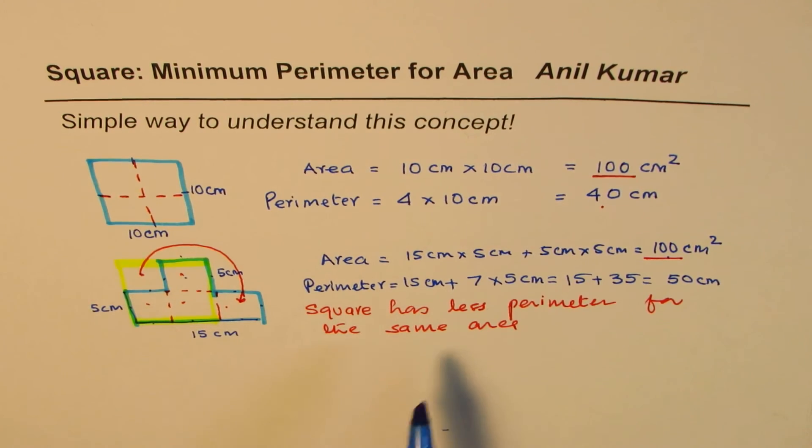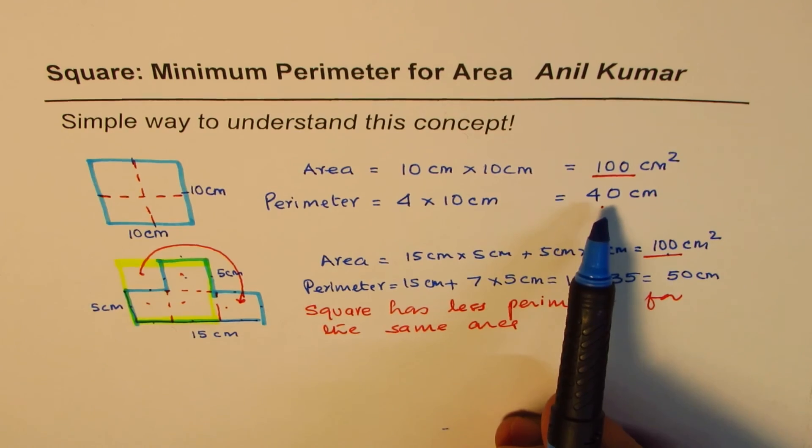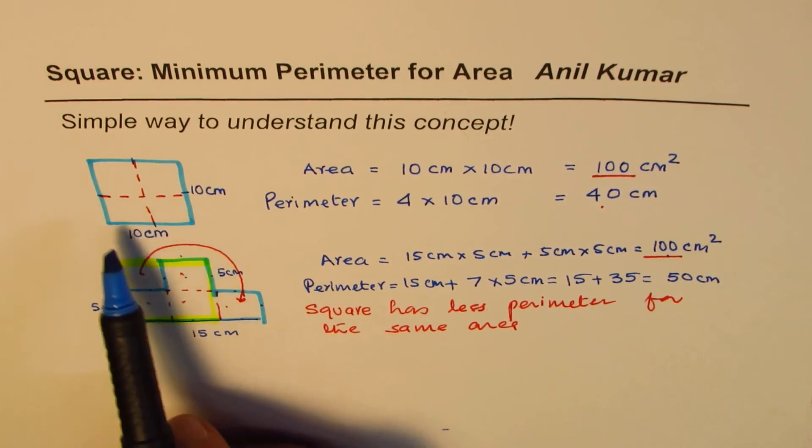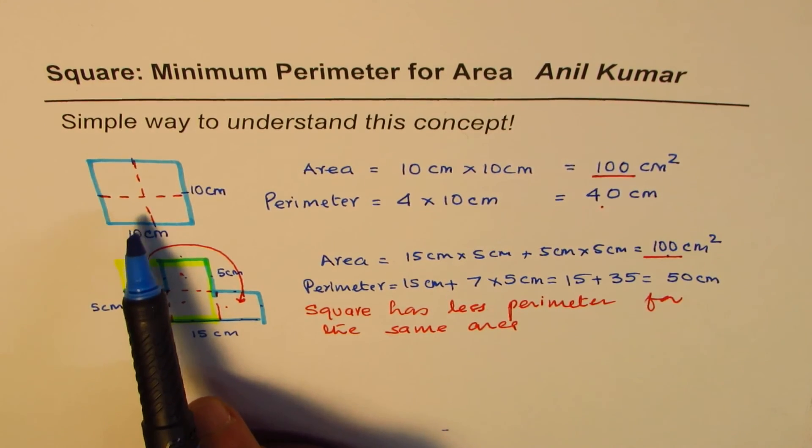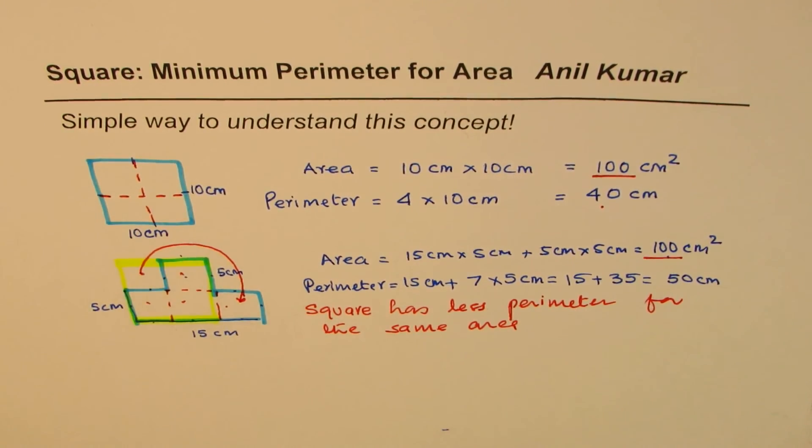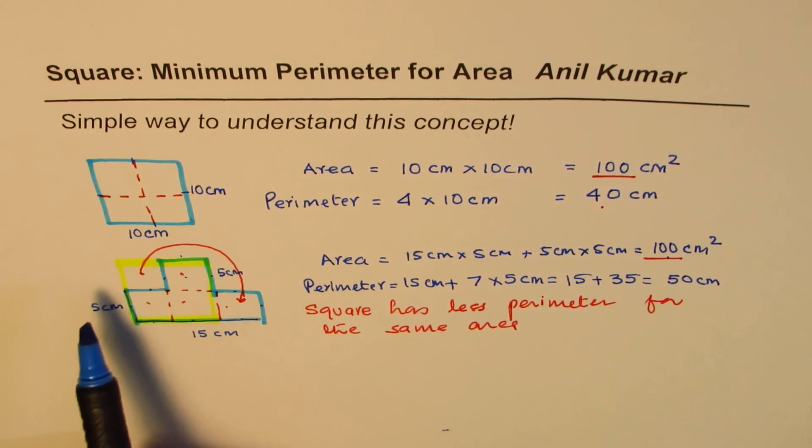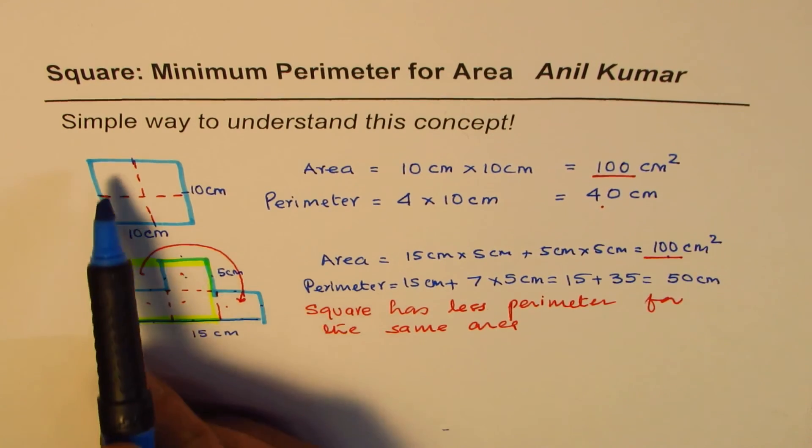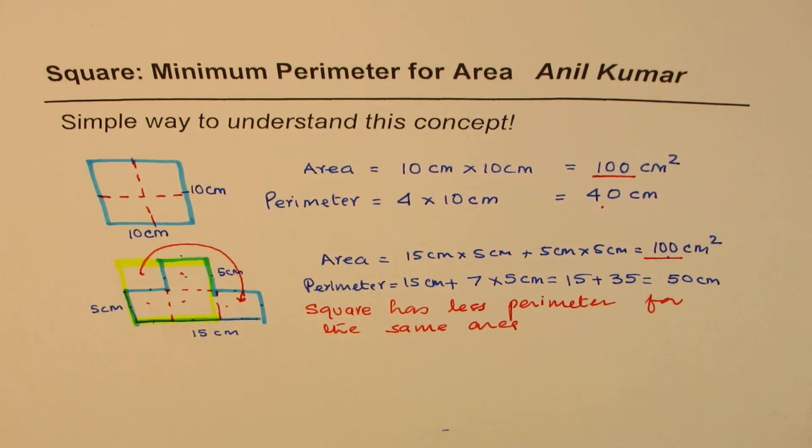So in this exercise what you learn is that for the same perimeter, maximum area is for the square. And if we retain the area, in that case the perimeter increases if you change the size. If you cut any portion of this square your perimeter will increase, and if you add that to the structure area remains same. So this is a very important concept which I hope you understand from this particular topic. Thank you and all the best.